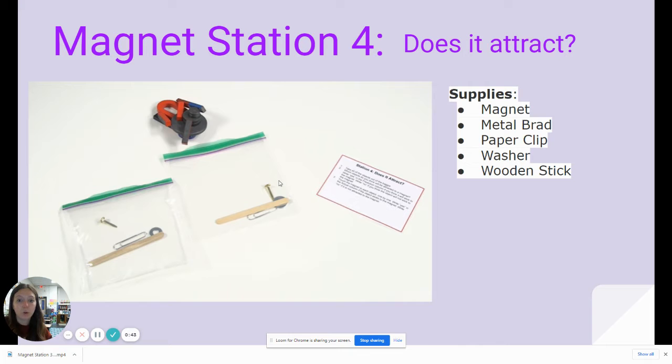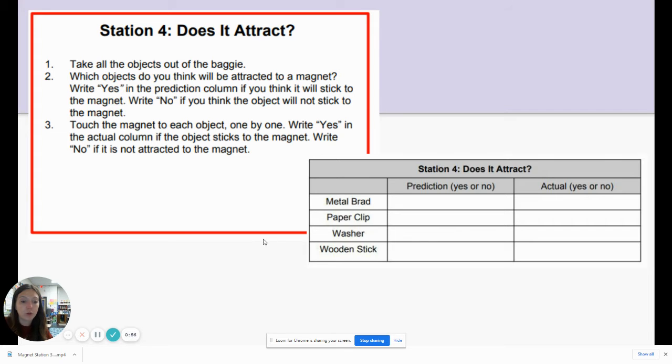If you wanted to try this at home, you would need a magnet, a metal brad—there's a picture of one right here in the baggie—a paper clip, a washer, and a wooden stick. So those are the things you would need. If you don't have them, that's okay. I will do them for you and you can just complete your assignment with me.